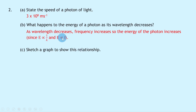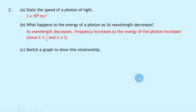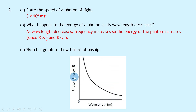Using either relationship: as wavelength decreases, energy increases; or since wavelength decreasing means frequency increasing, energy increases as well. Part c says to sketch a graph to show this relationship. Putting photon energy on the y-axis and wavelength on the x-axis, you should again get an exponentially decaying curve showing that as wavelength increases, photon energy decreases, or as wavelength decreases, photon energy increases.